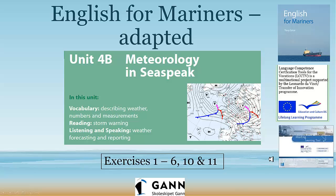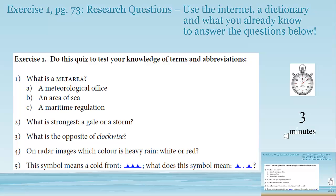Alright, let's get going. Usually when we start a new unit, we have research questions. What you're going to do — you've only got three minutes this time. Use the internet, a dictionary, hopefully what you already know from Unit 4A, and answer these five questions. The first one: what is a met area? Is it a meteorological office, an area of sea, or is it a maritime regulation?